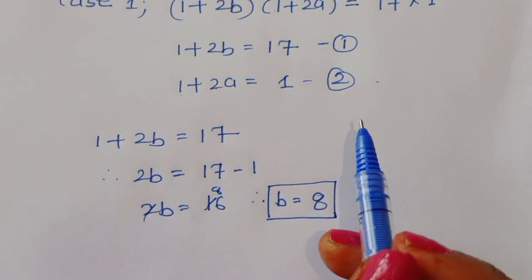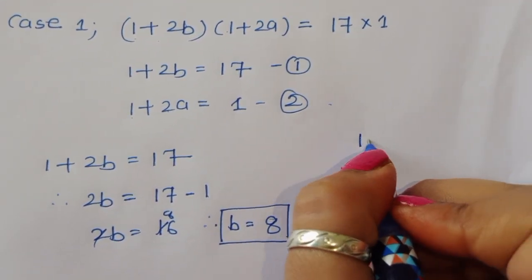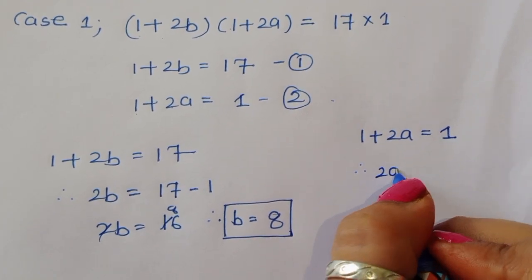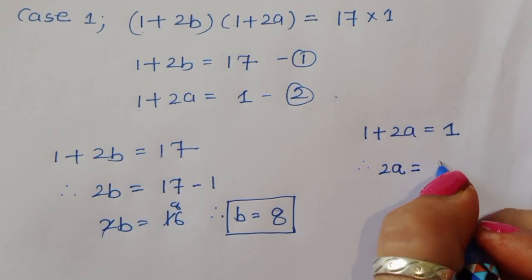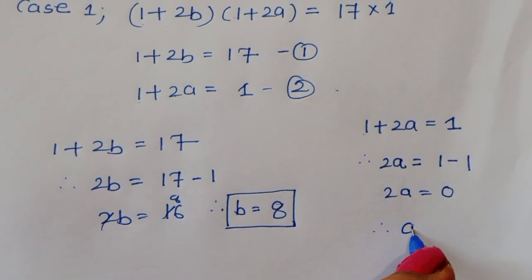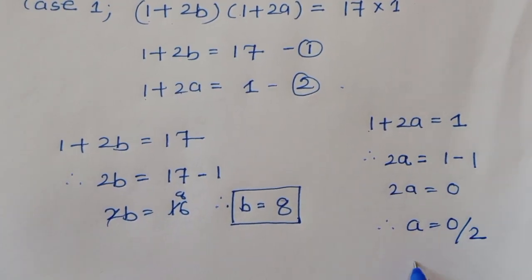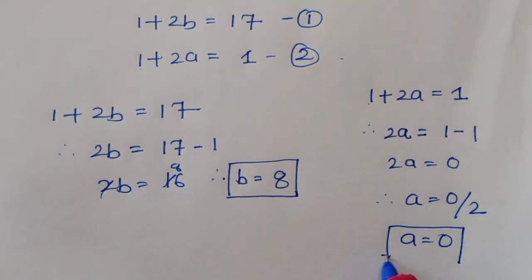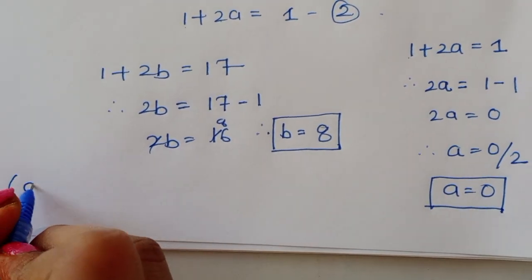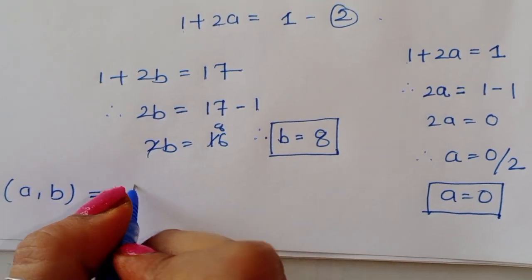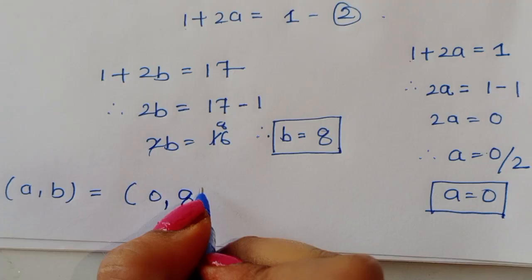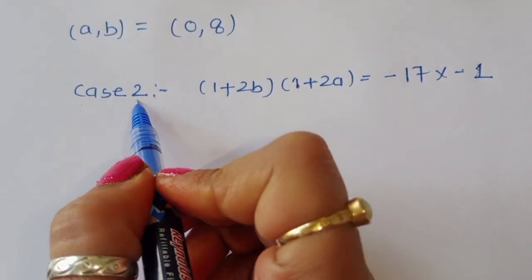From equation 2 in Case 1: 1 plus 2a equals 1, so 2a equals 0, therefore a equals 0. So from Case 1, we get a equals 0 and b equals 8.